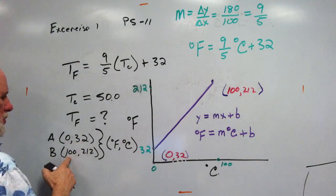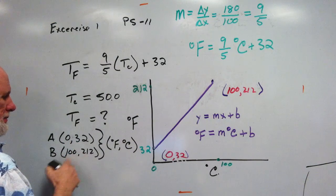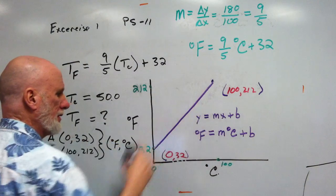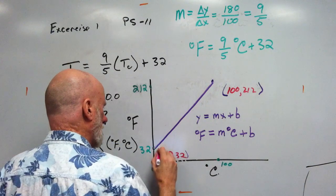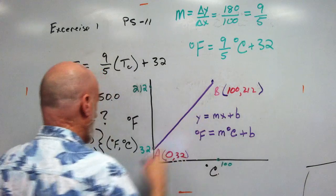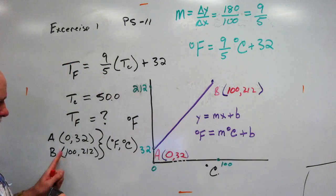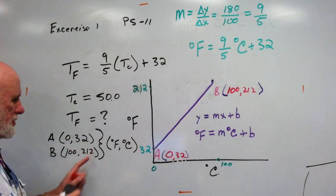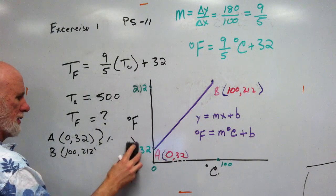I'm going to erase this. This was for this. 0, 32, 100, 212. A and B. A and B. Correct? A, B. Correct? Easy? 0, 32, 100, 212.